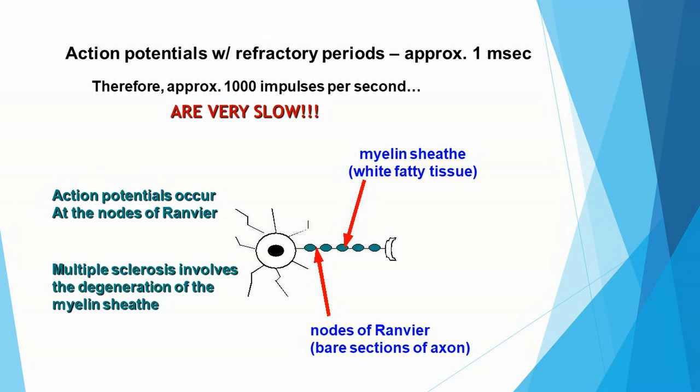The disease can continue and progress until other body systems are affected as well. Multiple sclerosis involves degeneration of the myelin sheath.